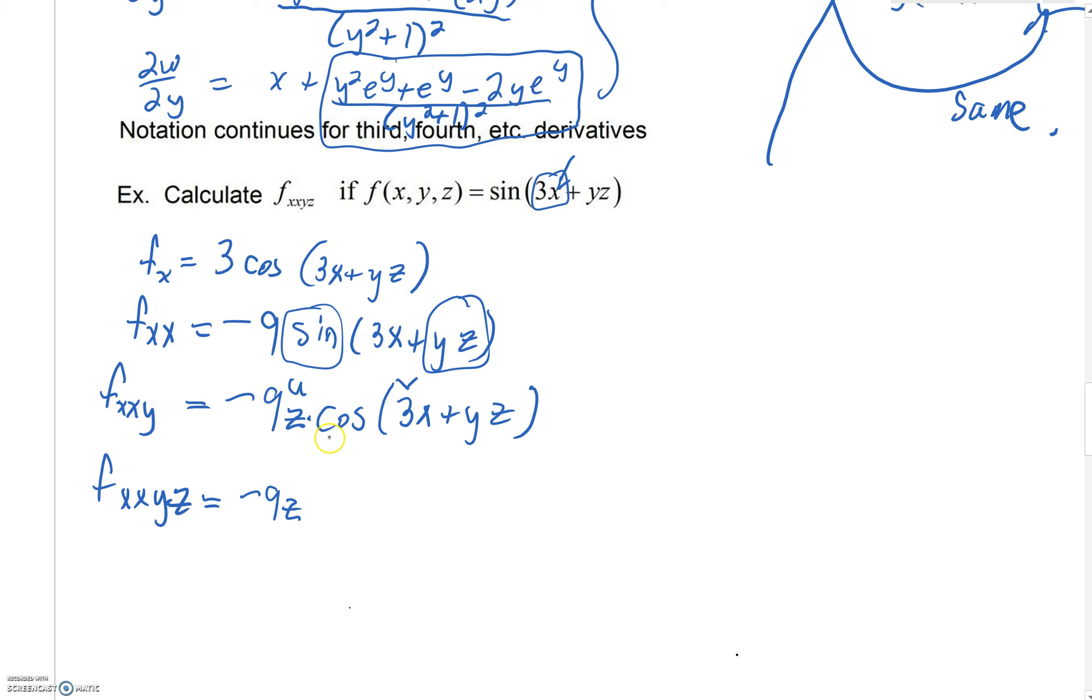What's the derivative here with respect to z? Well, we need the chain rule. We're going to need a negative sine of this 3x plus yz.